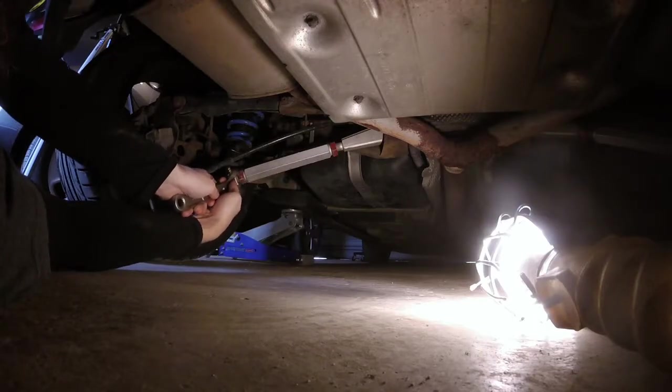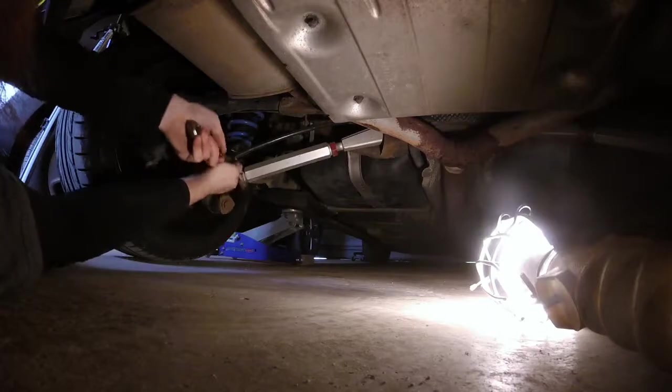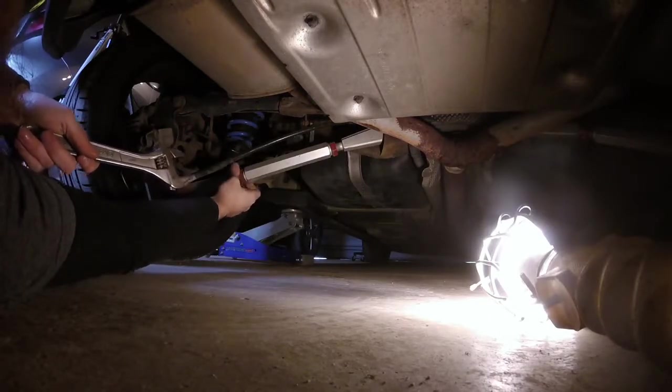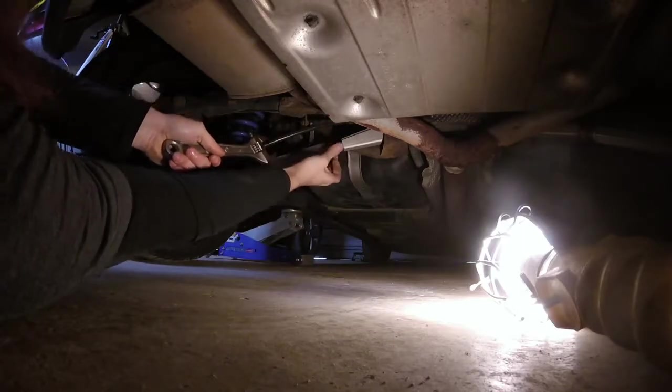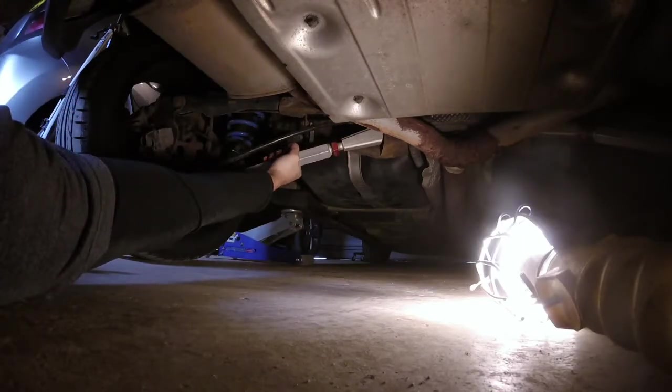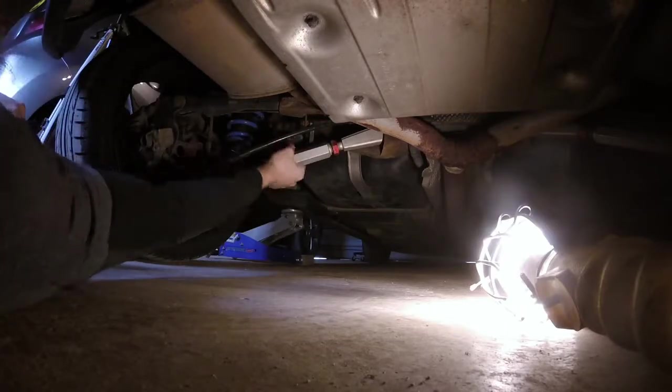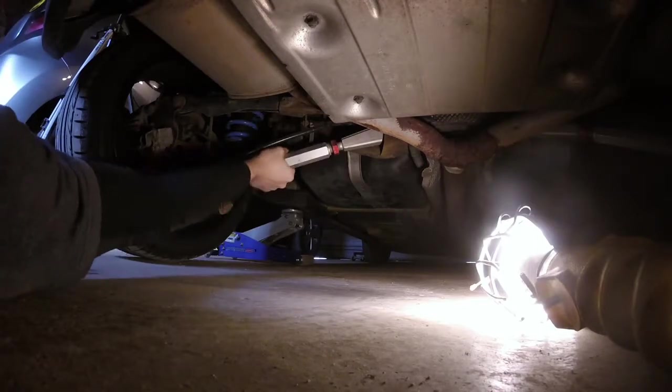So here we are underneath the car and we're looking at this adjustable control arm. Often these are needed if you want more adjustment for your camber and sometimes for your toe as well depending on the vehicle. A lot of vehicles from the factory don't have much or sometimes any adjustment at all, and the fact that I put new lowered suspension on this car means that to correct my camber I need to get these arms.